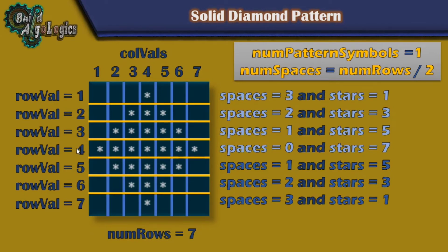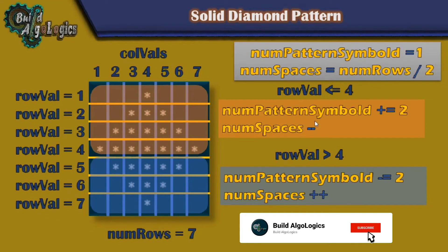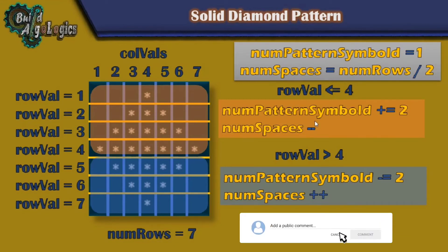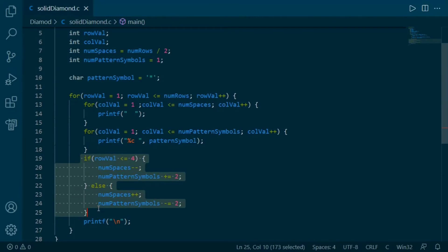This separator line is nothing but row number 4, so we can use this value as our base condition — when row number is less than or equal to 4, increment stars by 2 and decrement spaces by 1. When row number is greater than 4, increment spaces by 1 and decrement stars by 2. So our code will look something like this, checking this condition after printing each row.